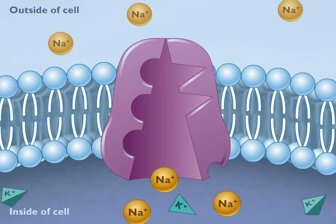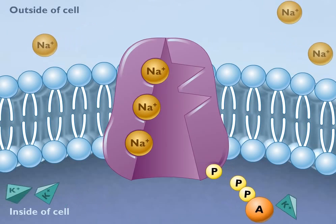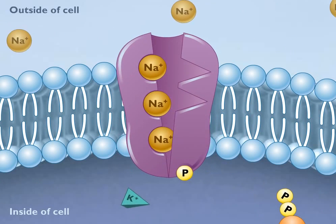In its original shape, the channel has a high affinity for sodium ions, and when these ions bind again, they initiate another cycle.